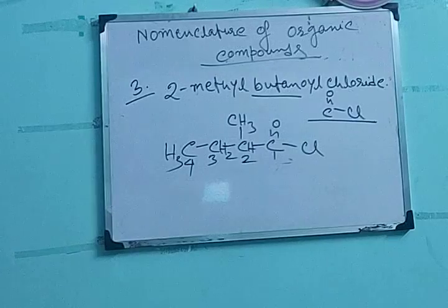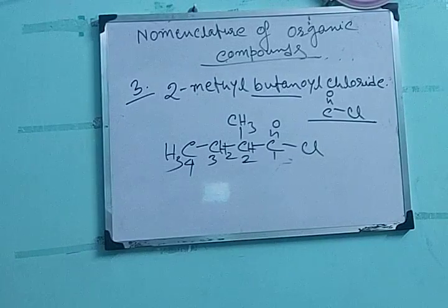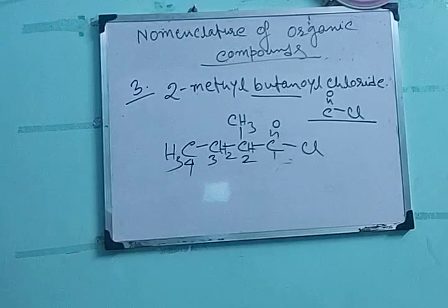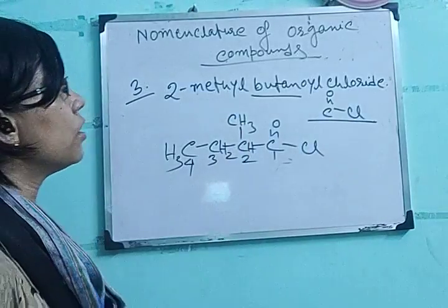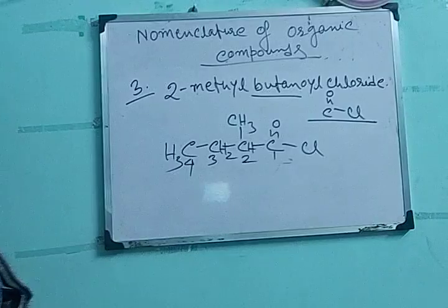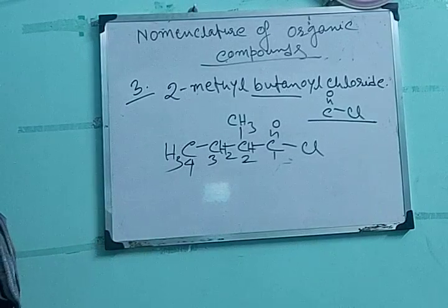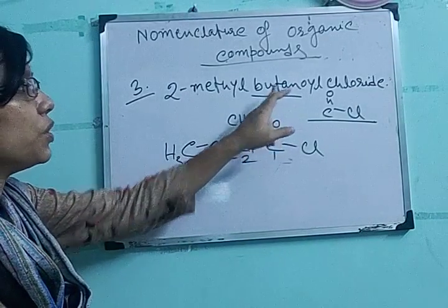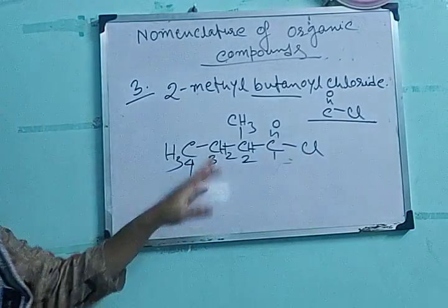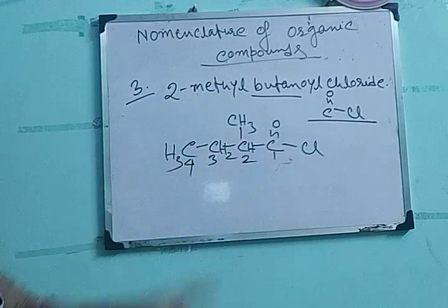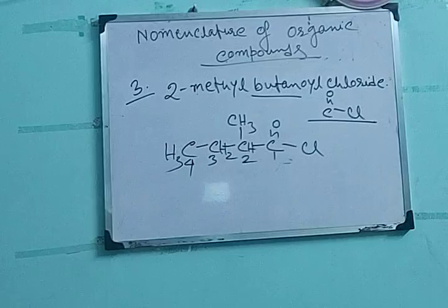So this is 2-methylbutanoyl chloride: CH₃-CH₂-CH(CH₃)-C=O-Cl. First identify the functional group — anoyl chloride gives COCl. Total number of carbon atoms is 4 as it is butanoyl. Including the carbonyl carbon: 1, 2, 3, 4. Put the substituent accordingly and the number of hydrogens depending on the valency of carbon.